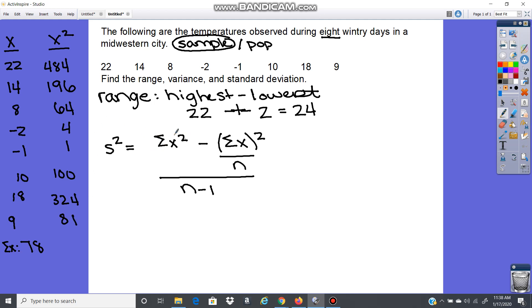To use this in the formula, I want the sum of my x squared values. So 484 plus 196 plus 64 plus 4 plus 1 plus 100 plus 324 plus 81. That's going to give us 1254. And our n, that's how many values we have—we had 8 wintry days, so n is 8.